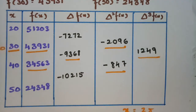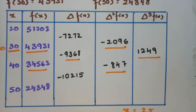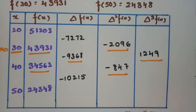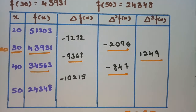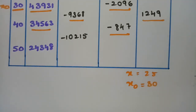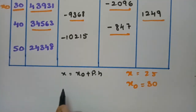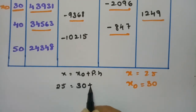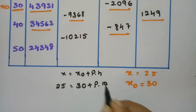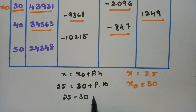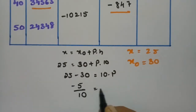Whereas in Stirling's formula, you start with a single value first, then double, single, double — 'S for Stirling, single we have to start.' In Bessel's interpolation, we take 2 values first, then single values. I have opted x₀ as 30. Using the formula x = x₀ + P·h, where x = 25, x₀ = 30, h = 10, we get 25 - 30 = 10·P, so P = -0.5.